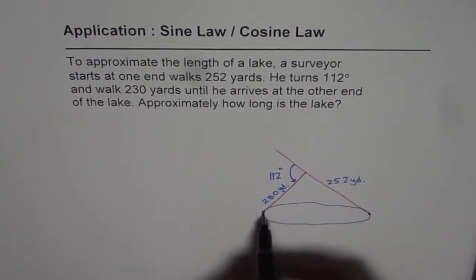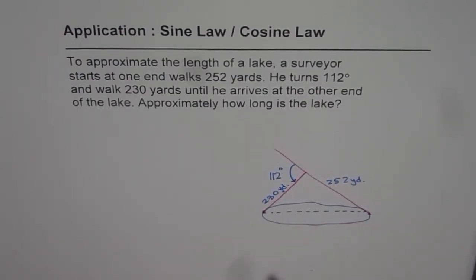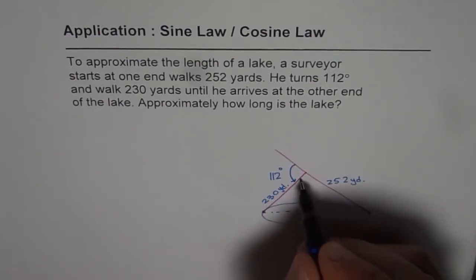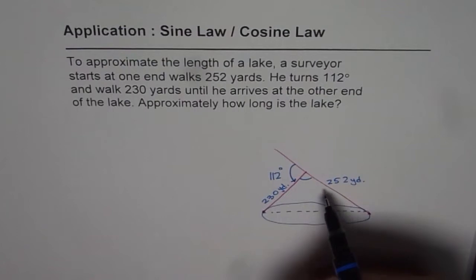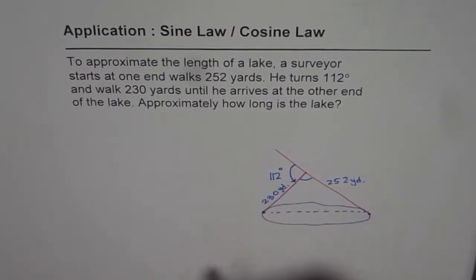We need to find the length of the lake. This is the distance we need to find. We are given two sides and the included angle. The included angle should be 180 minus 112.